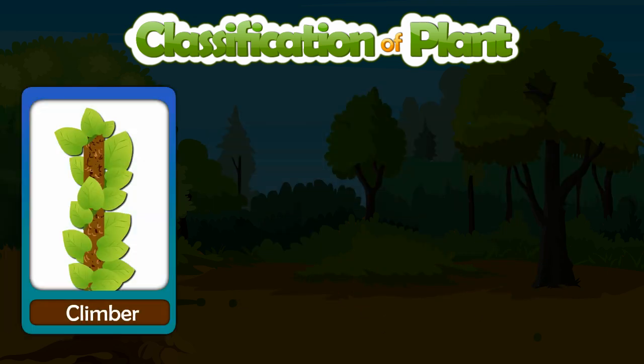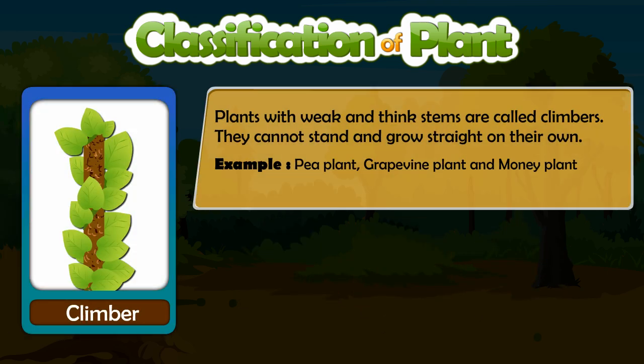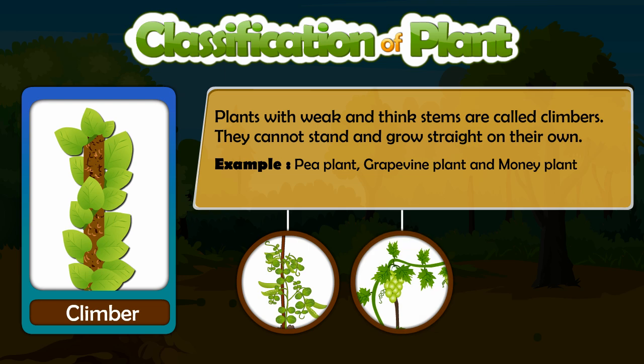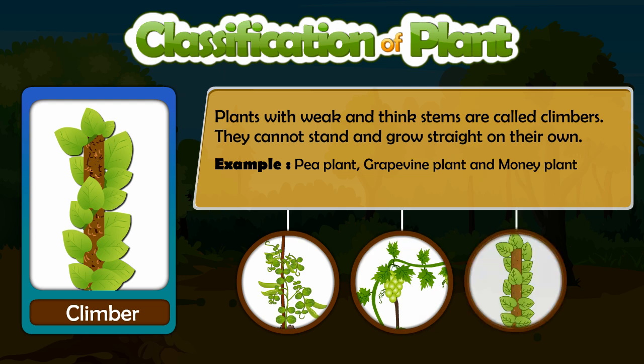Plants with weak and thin stems are called climbers. They cannot stand and grow straight on their own. Examples: Pea plant, Grapevine plant and Money plant.